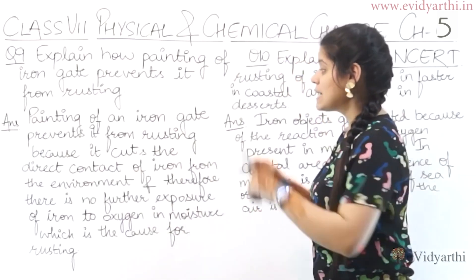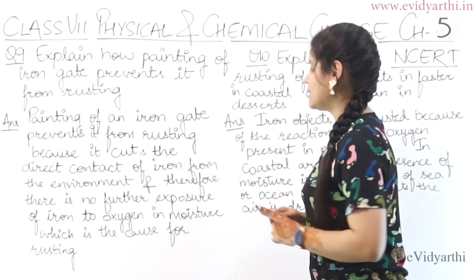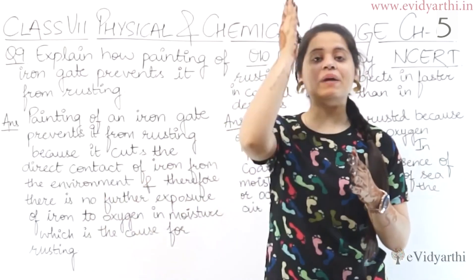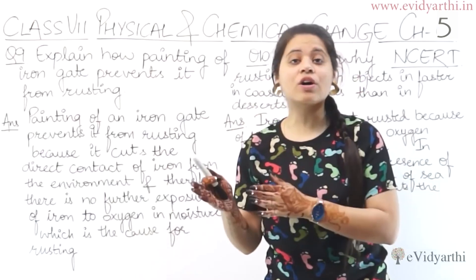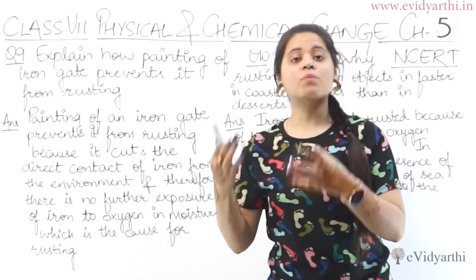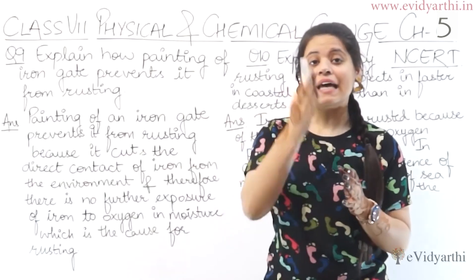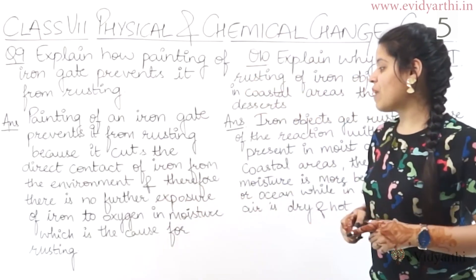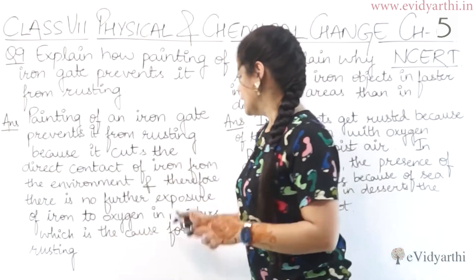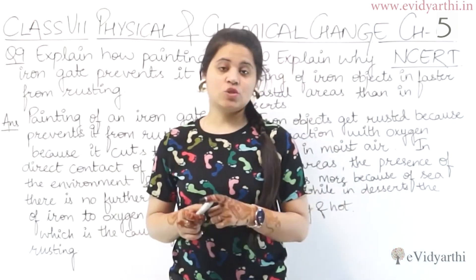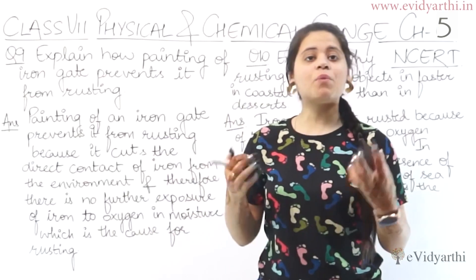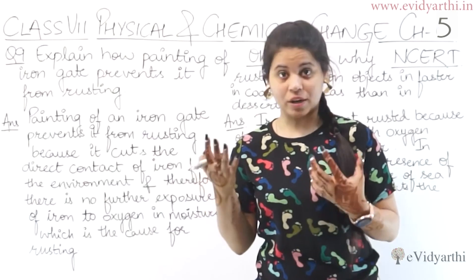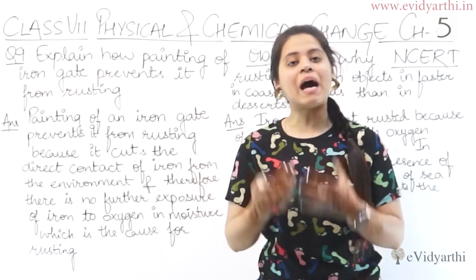Painting cuts the direct contact of iron from the environment. When iron is covered by paint, there is no further exposure of iron to oxygen and moisture, which is the cause for rusting. So with paint, iron has no direct contact with moisture, and therefore it will not be rusting.